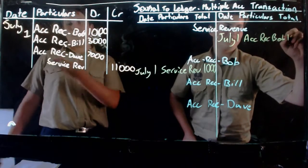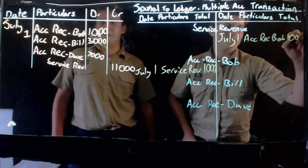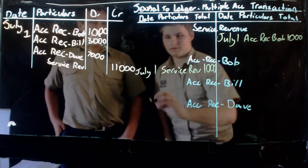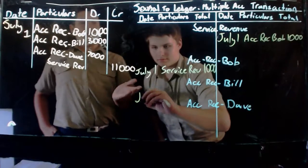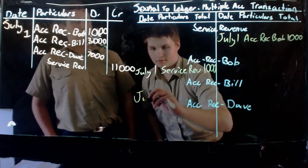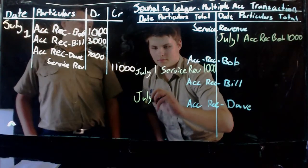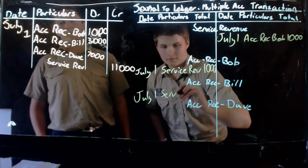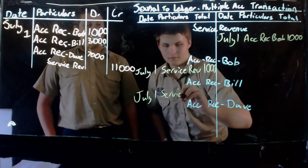Then again, the accounts receivable for Bill, which is for three thousand dollars — we need to have an entry in his accounts receivable account in the ledger, and then once again an entry for him in the service revenue account.